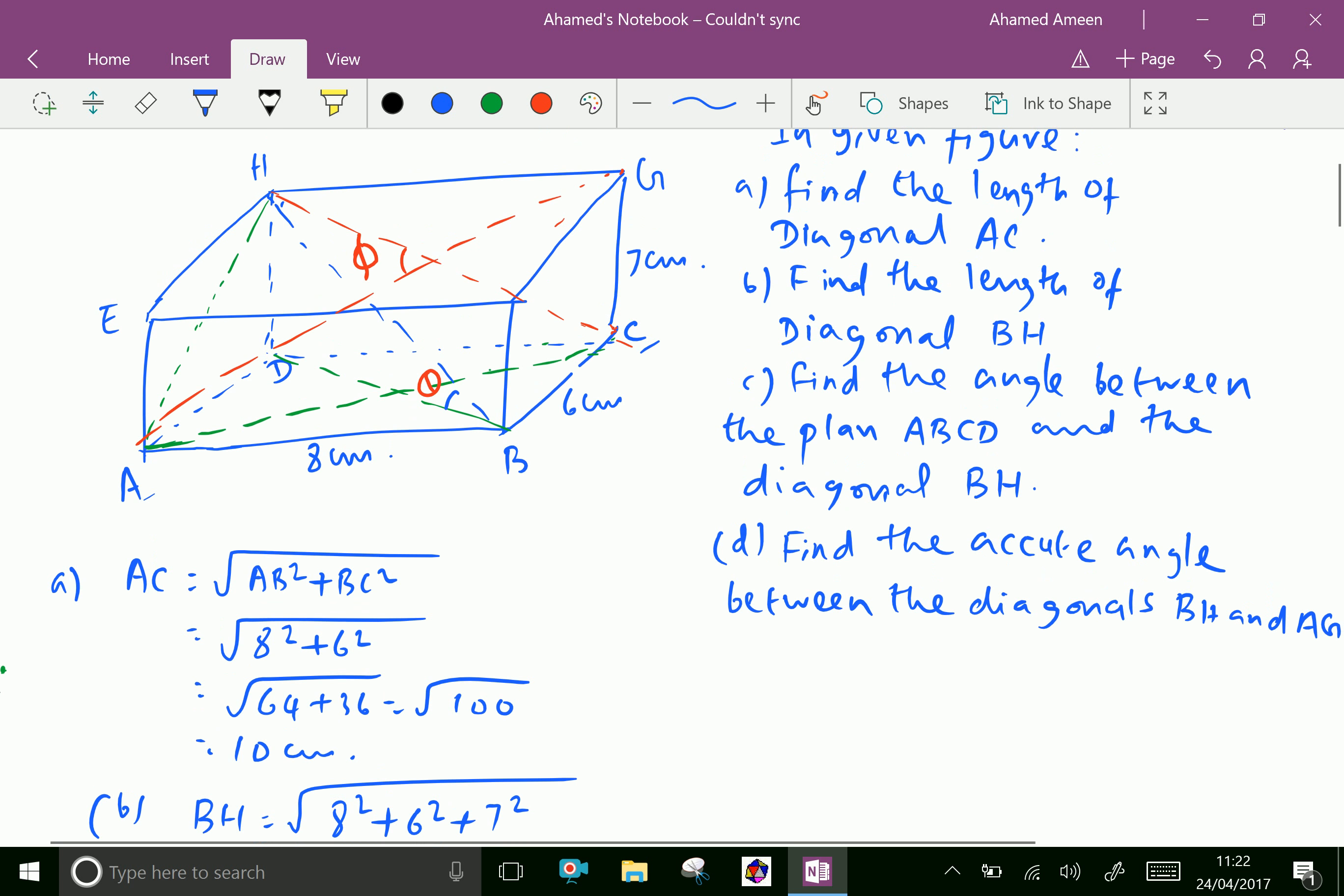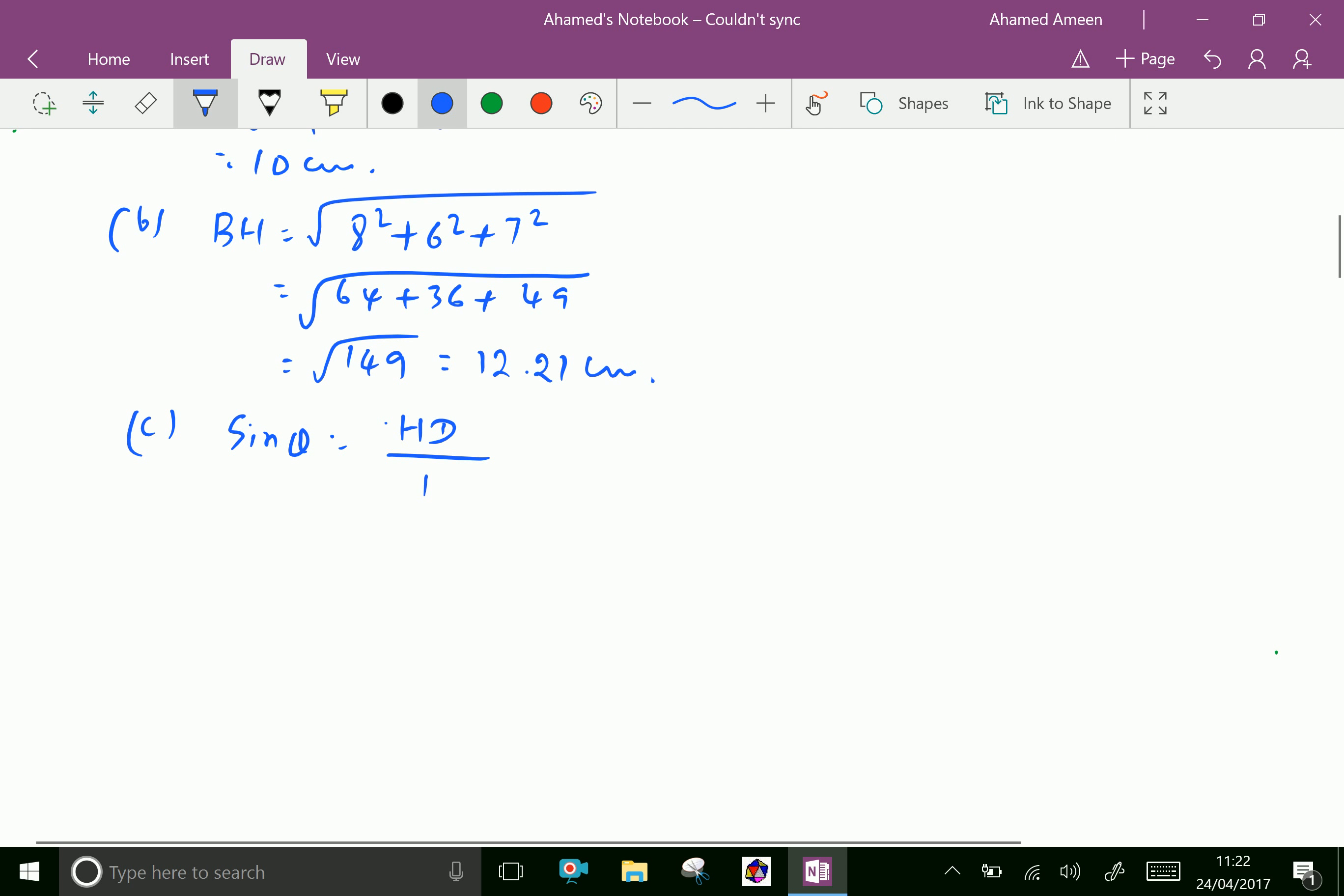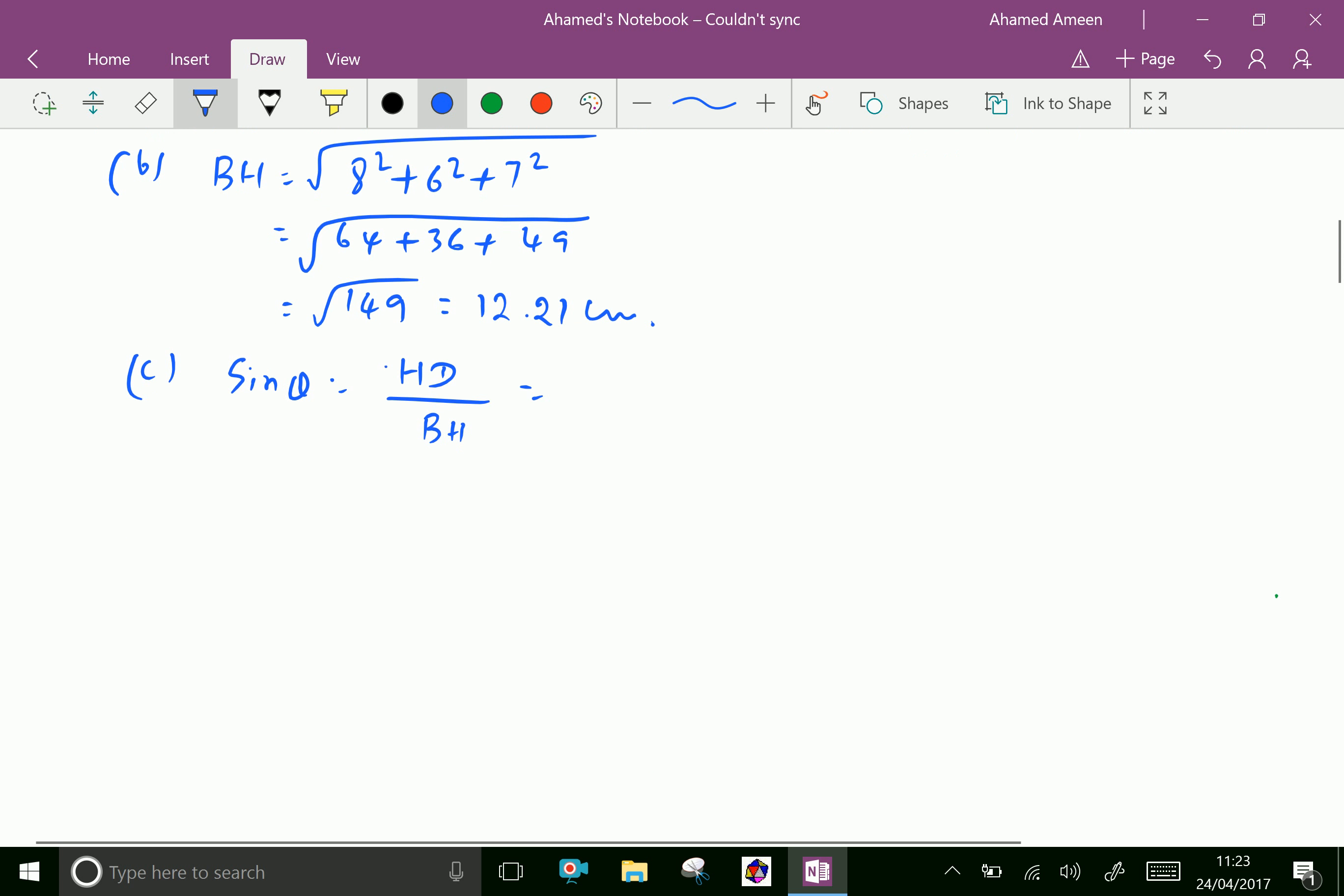Opposite is HD over hypotenuse is the longest diagonal BH. Now HD equals 7 over BH is 12.21.